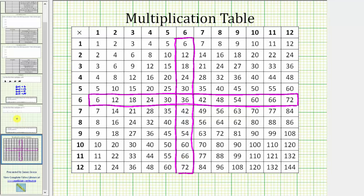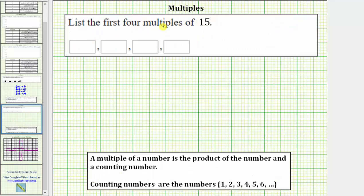Let's look at one more example. Here we're asked to list the first four multiples of 15. The first multiple of 15 is 15 times one, which is 15.